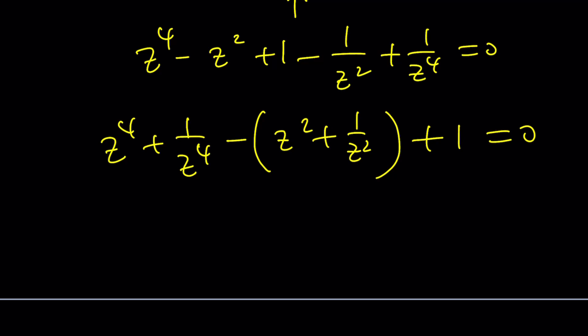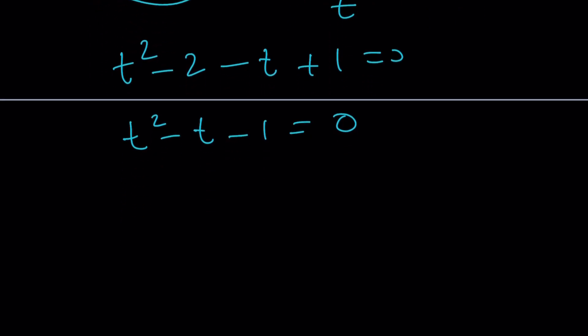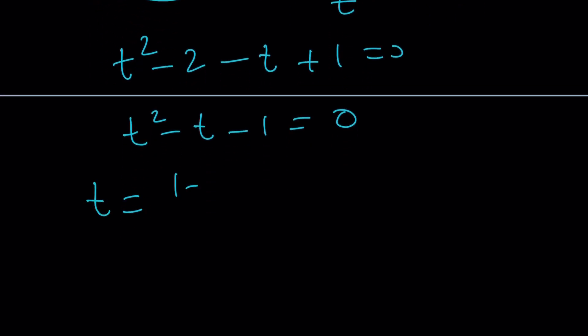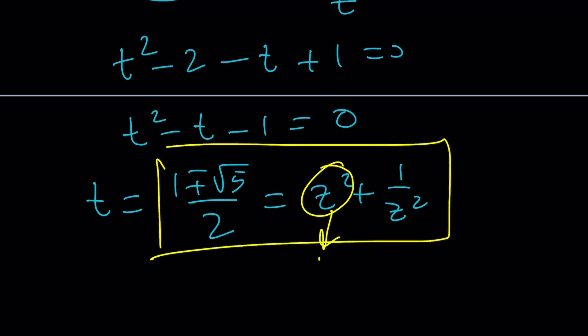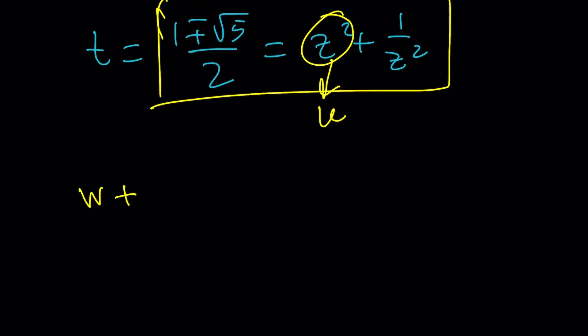What does this give you? Substitution. Call this t. You can use w or something else as well. This gives us, by the way, this is t squared minus 2. And then minus t plus 1 equals 0. This is t squared minus t minus 1 equals 0. Uh-oh. That smells like golden ratio, right? And from here we get t equals 1 plus minus root 5 over 2. And then this is basically z squared plus 1 over z squared. You get a quartic equation. But if you do replace z squared with something, how about u? Then you get a quadratic and then you can back substitute. That's a lot of work, don't you think?